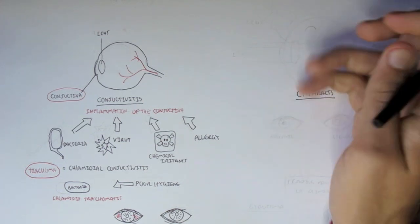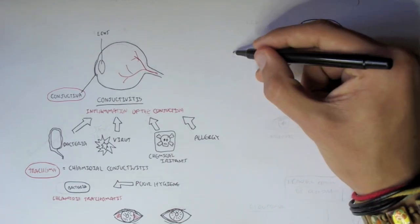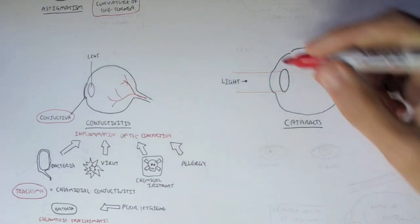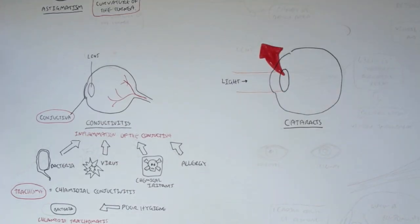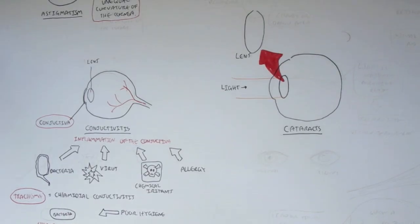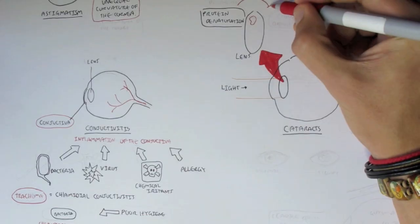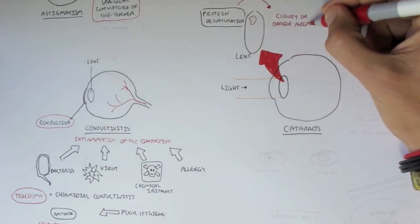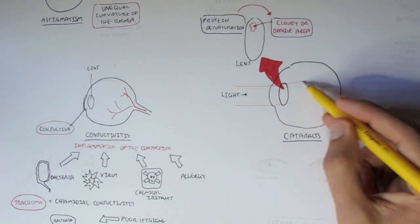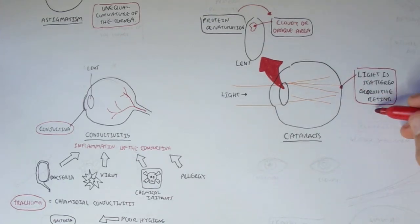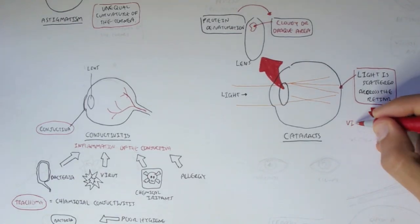Next disorder are cataracts. And here we have the eyeball again. Light, as we know, comes in. So light comes in and goes to our lens. Cataract is a problem with the lens. So if you look at this lens, a cataract is essentially when the lens, certain proteins denature in the lens. And the denaturation of these proteins will then cause cloudy or opaque areas to be formed. Now these cloudy and opaque areas will cause light to be refracted distortedly everywhere, scattered around. So light is scattered across the retina. And what this causes then is vision impairment and blurry vision.